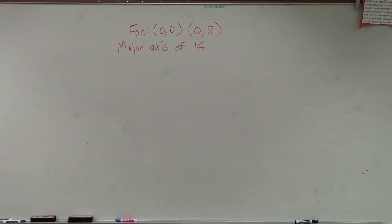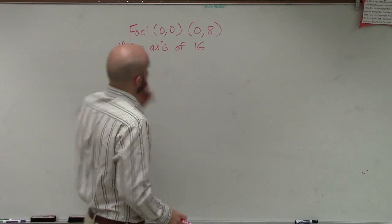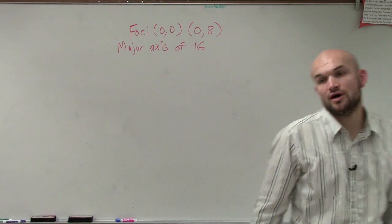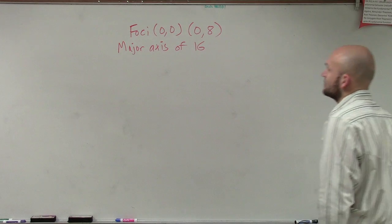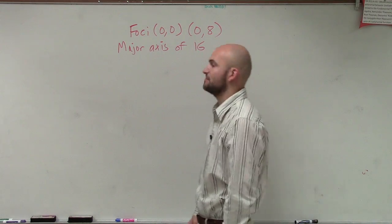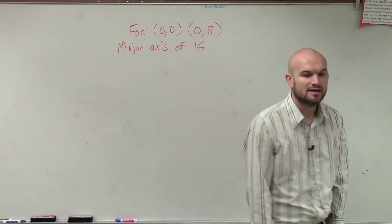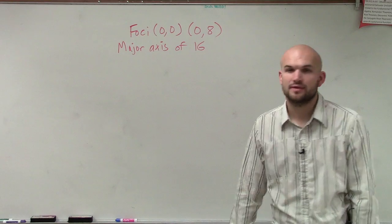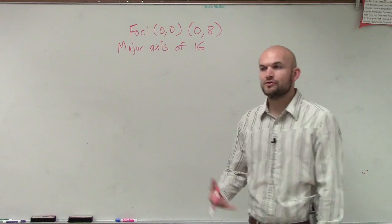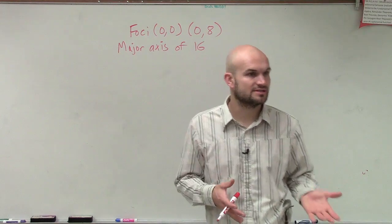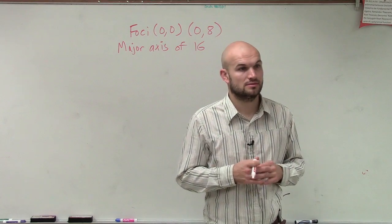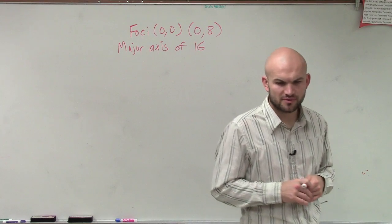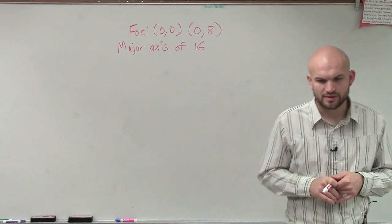Okay, so what we have here, ladies and gentlemen, is we're given the foci of (0,0) and (0,8), and we're also given a major axis length of 16. And what they're asking us to do is to find the standard form of the ellipse. So whenever you're given just points and they're asking you to find the standard form, I believe this is number 41.